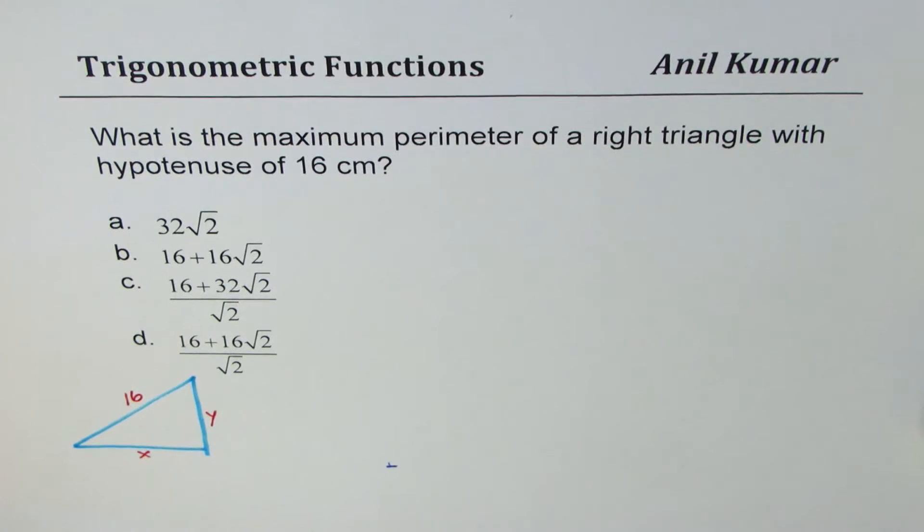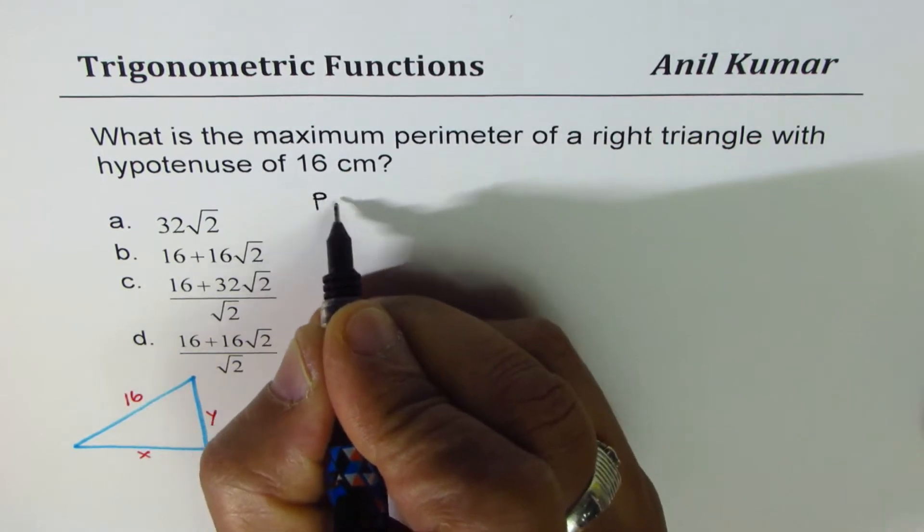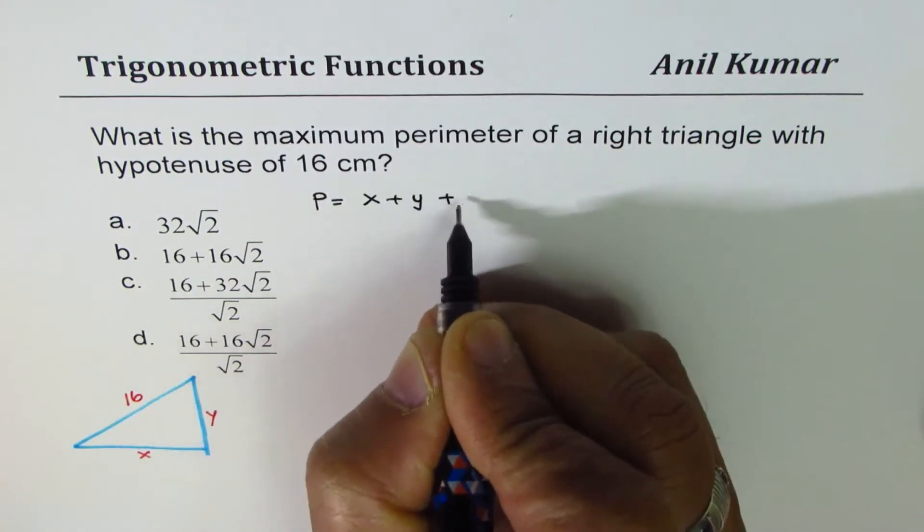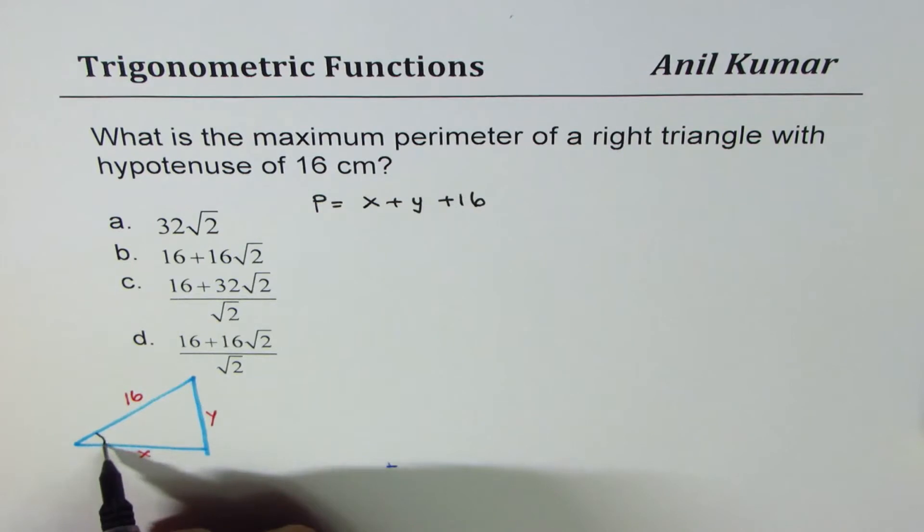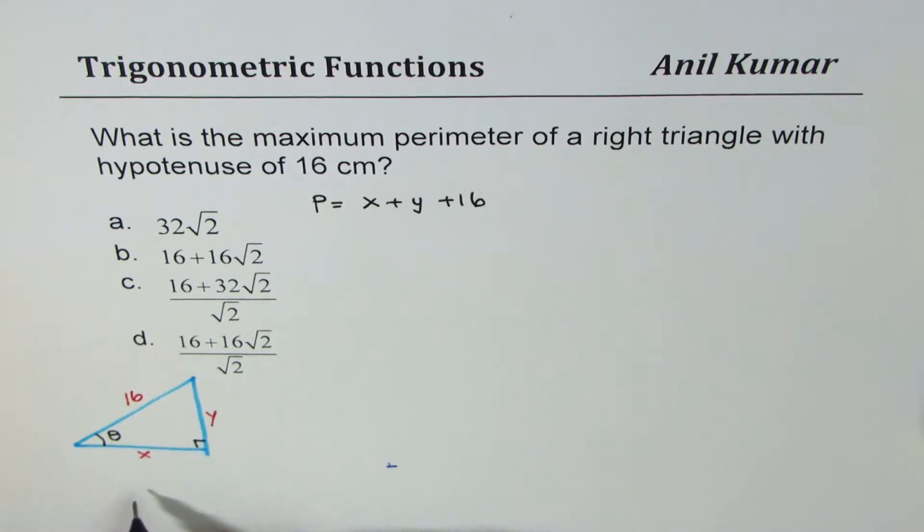Let's say that's the triangle where the hypotenuse is 16 and let these sides be x and y. Now if the sides are x and y, the perimeter is x plus y plus 16. We'll assume theta to be an angle which is greater than or equal to 0 but less than or equal to 90 degrees.